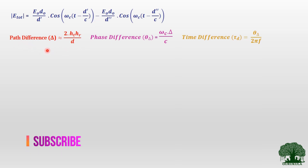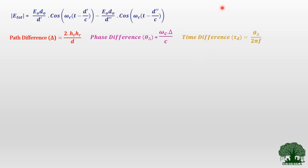By using the method of imaging, we computed the path difference in terms of h_T, h_R, and D. The approximated value is 2·h_T·h_R divided by D. We also found out the phase difference, given by ω_C times Δ divided by C. The time difference was also calculated, and while not heavily used in this derivation, it is important to note that equation as it will be helpful for solving problems related to the two-ray propagation model.